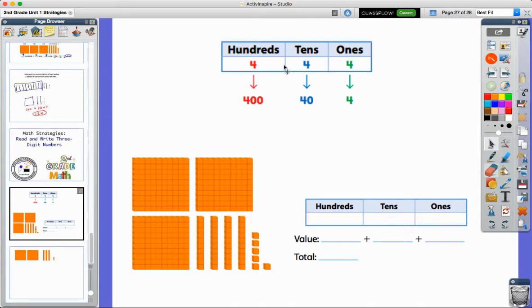Then we start to think about what the value is. So the value of four groups of 100, or four hundreds, is 400. Well, we know that four groups of 10 equals 40, and when the ones place, whatever the digit is, that is its value, so 4.